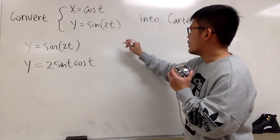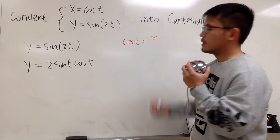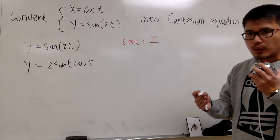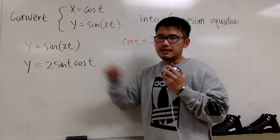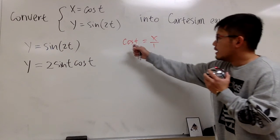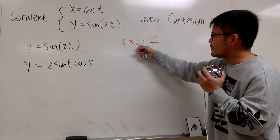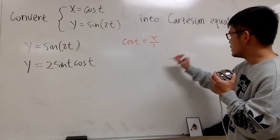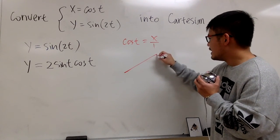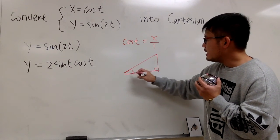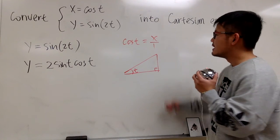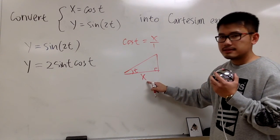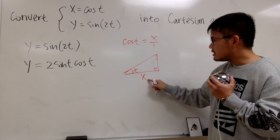So this is how we can do it. We know cosine t is equal to x. Let me write this as x over 1, because I want to come up with a right triangle — this way I can figure out an expression in terms of x for sine t. The t here is an angle. Cosine of angle t equals x over 1. In the right triangle, put the right angle here and angle t here. Cosine is adjacent over hypotenuse, so the adjacent side is x and the hypotenuse is 1.